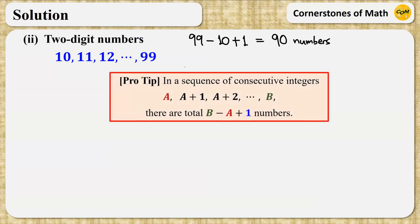And perhaps now is a good time to remind a useful tip for counting numbers in a sequence of consecutive integers. In a sequence of consecutive integers starting from integer A and going A plus 1, A plus 2, and so on, ending at natural number B, the number of terms in this sequence is end number B minus starting number A, plus 1.